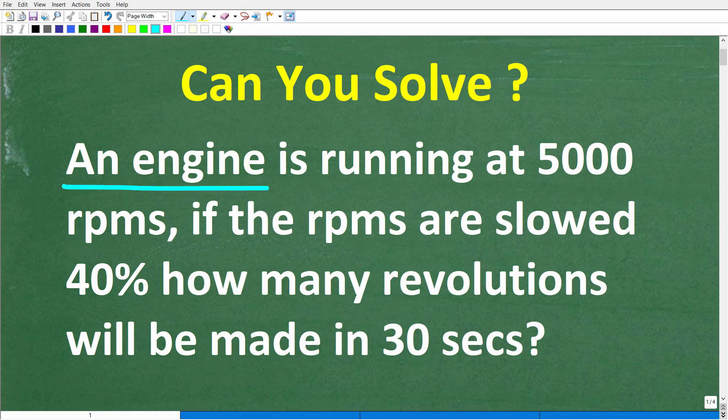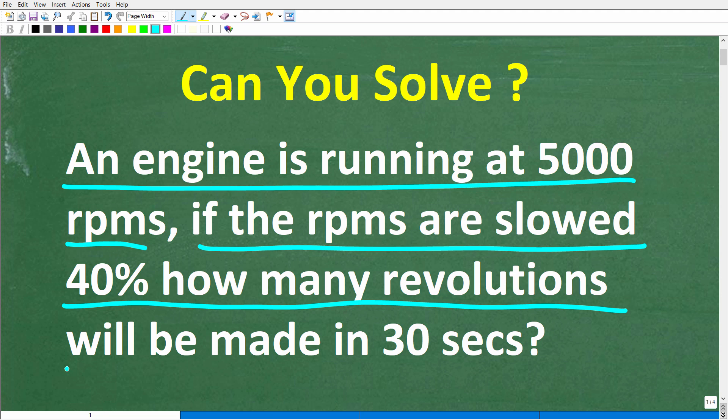An engine is running at 5,000 RPMs. If the RPMs are slowed 40%, how many revolutions will the engine make in 30 seconds?